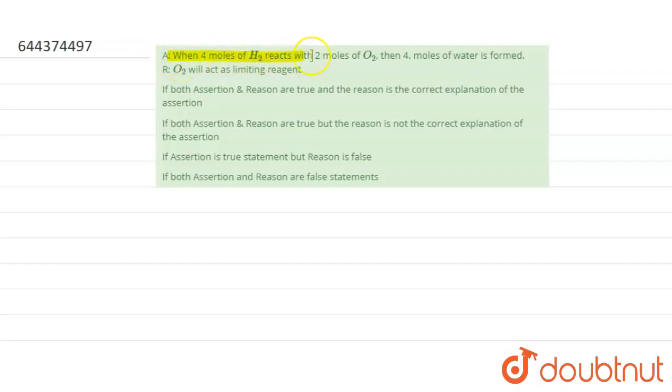four moles of H2 reacts with two moles of O2, then four moles of water is formed. And second, the reason is given: O2 will act as limiting reactant.